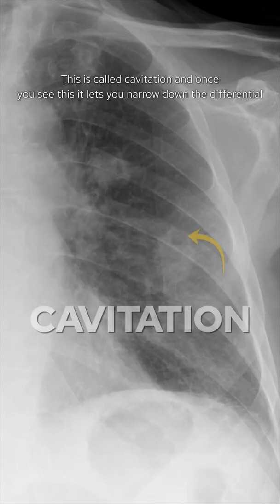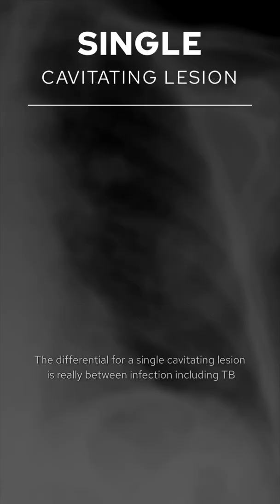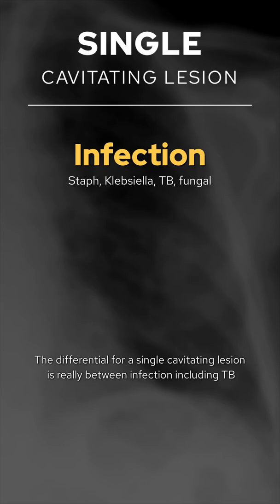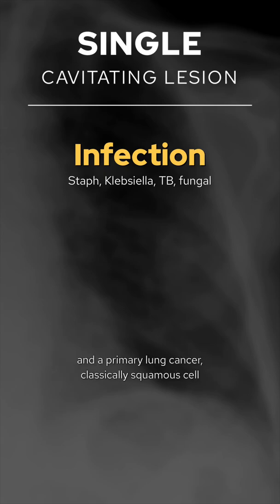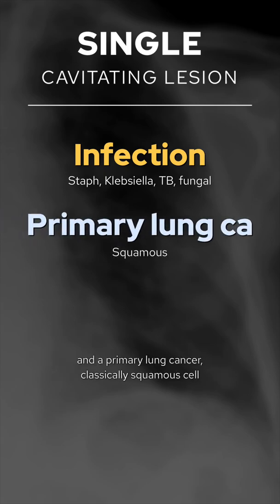This is called cavitation, and once you see this, it lets you narrow down the differential. The differential for a single cavitating lesion is really between infection, including TB, and a primary lung cancer, classically squamous cell.